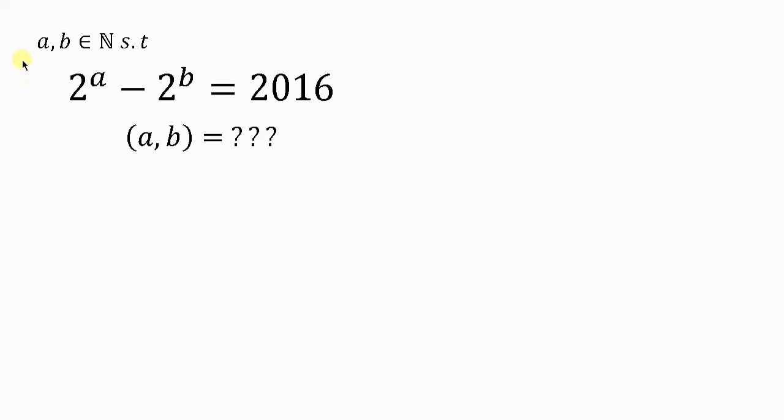We have a question on the board which says A and B are natural numbers such that 2^a - 2^b = 2016. We are to look for the values of A and B.